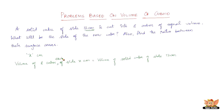If x is the side of the new cube, then x cubed is the volume of the new cube. So 8 times x cubed should equal 12 cubed, because 12 is the edge of the bigger cube. So we have x cubed equals 12 × 12 × 12 divided by 8.